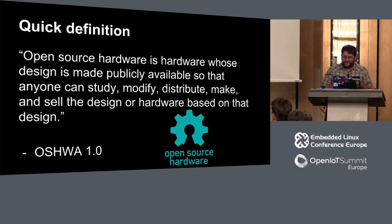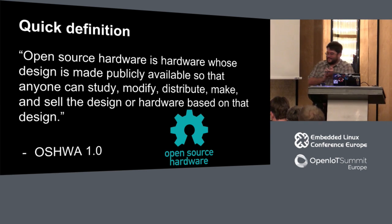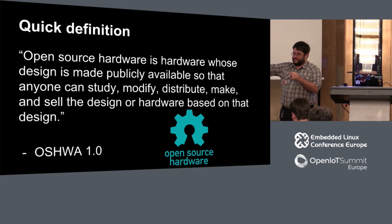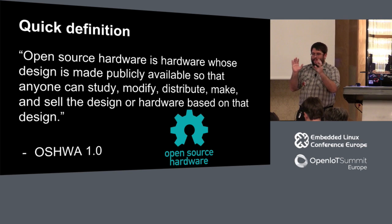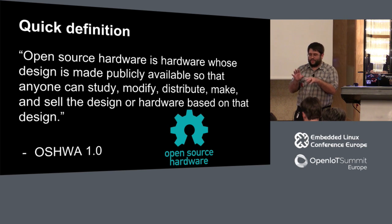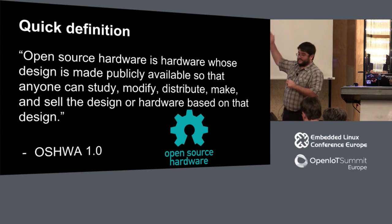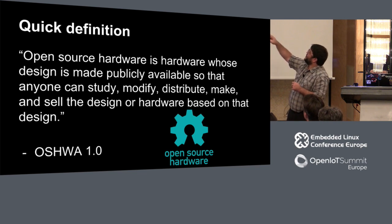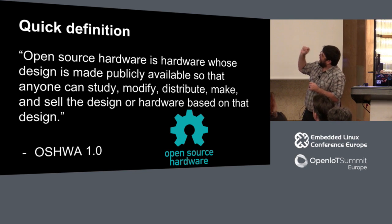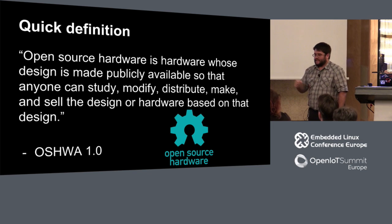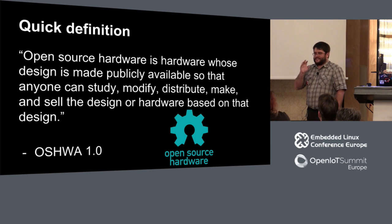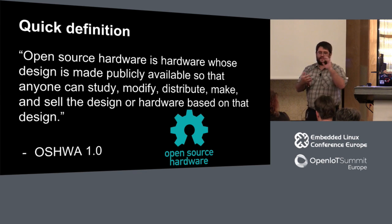So I should actually define what open source hardware is. I am using the Open Source Hardware Association 1.0's definition. There are many definitions out there and a bunch of them are all weirdly conflicting. Open source hardware is hardware whose design is made publicly available so that anyone can study, modify, distribute, make, and sell the design or hardware based on that design. This probably sounds very similar to licenses like the GPL or the BSD.